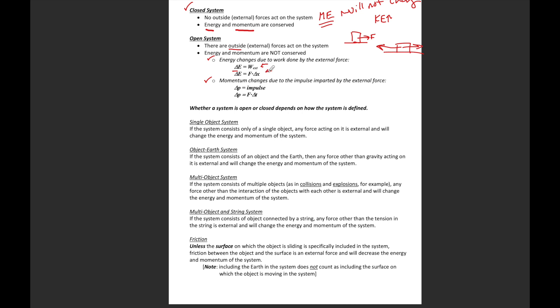To determine whether a system is open or closed, we just define the system. They're going to tell you what is in the system — this is a ramp-block-earth system, this is an object, this is an object with a spring. We're going to see all these things. Everything inside the box is in the system; everything outside is not part of the system.